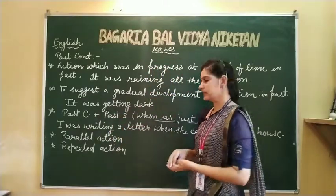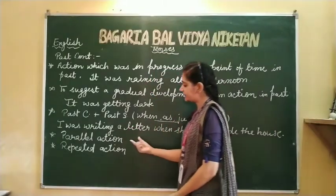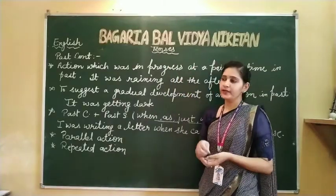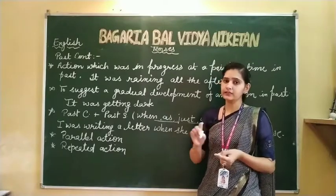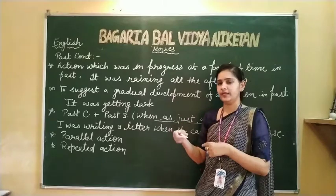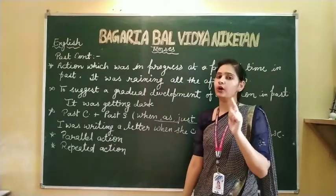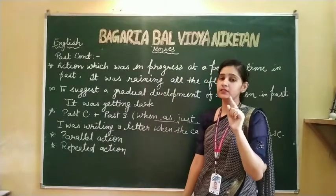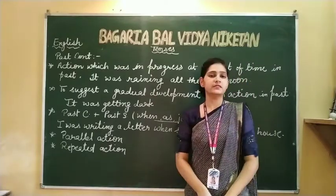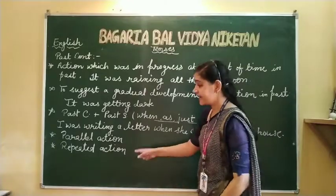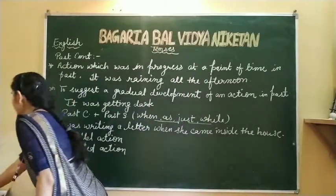इस तरीके से past continuous और past simple को link करके sentences बनाते हैं। Parallel action: when I was writing, she was cooking in the kitchen — यानि दोनों parallel में काम कर रहे थे। Repeated action जो past में चल रहे हैं उनके लिए भी हम past continuous का use करते हैं।